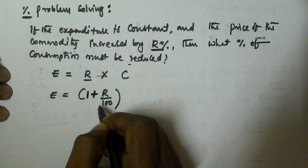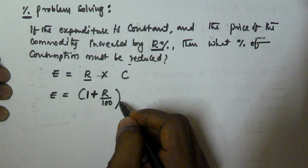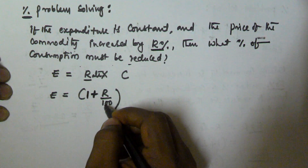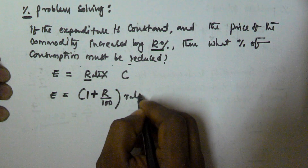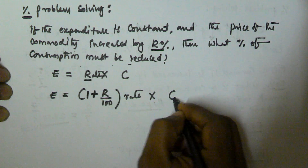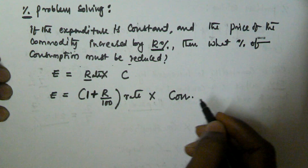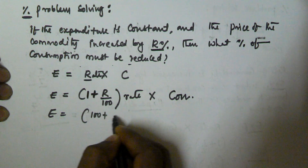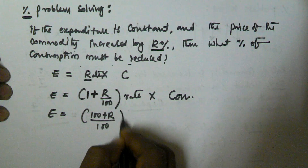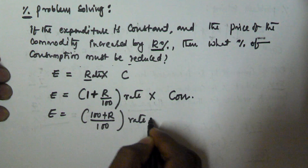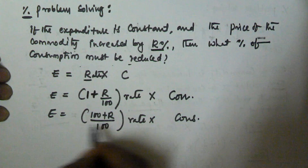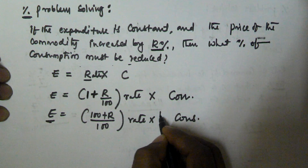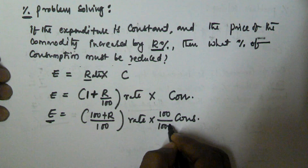So the current value after increasing R percentage of rate is 1 plus R by 100, into rate into consumption. Therefore, the expenditure is equal to 100 plus R by 100, into rate into consumption. But to keep expenditure constant, we have to multiply consumption by 100 by 100 plus R.